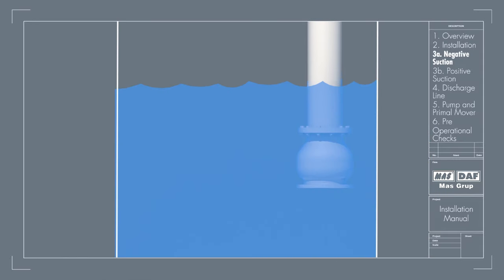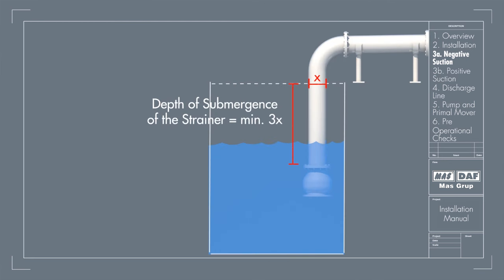The suction strainer must be at least 4 times the suction pipe area and the mesh size should screen out solid particles that would clog the impeller. The minimum depth of submergence of the strainer should be at least 3 times the pipe diameter measured from the upper row of holes strainer. The distance between the bottom of the strainer and the floor of the tank should be 2 times the pipe diameter.